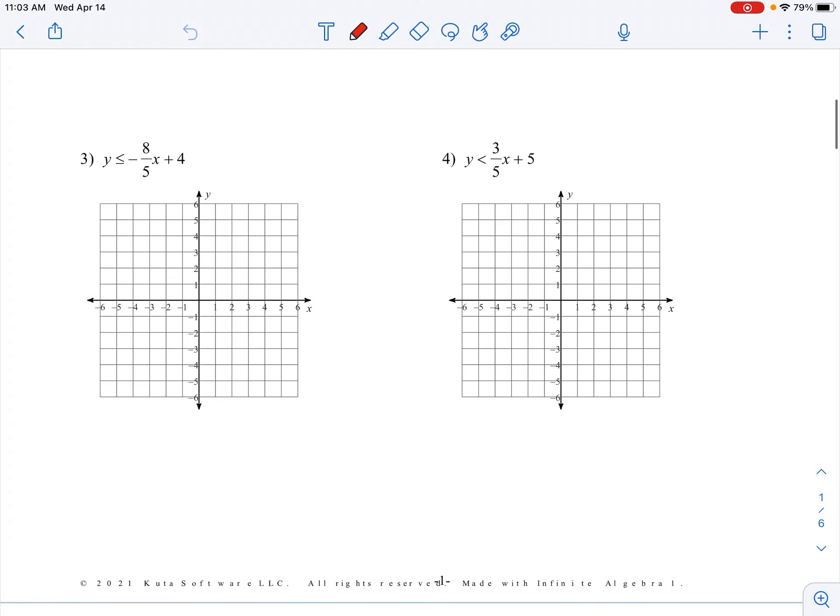All right, number three. It's going to be a solid line shown below. It's going to be decreasing. The y-intercept is 4 and the slope is negative 8 fifths.